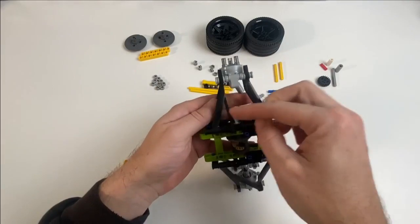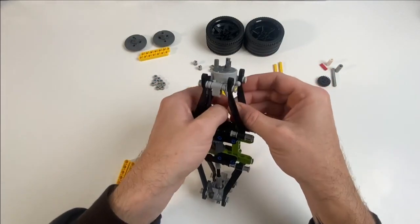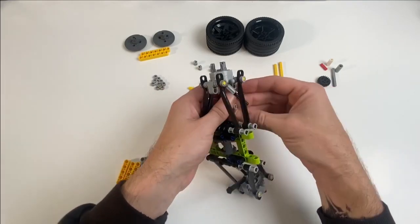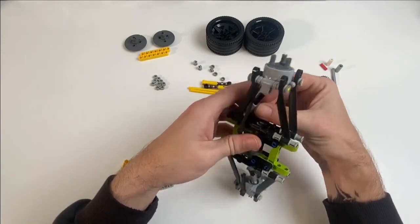Again, this component here actually should go on the other side of that wheel joint there. As I say, I do correct this later in the video. And these are really, really fiddly, these axles to connect here. So I actually just take it off and then kind of slide it back into place.